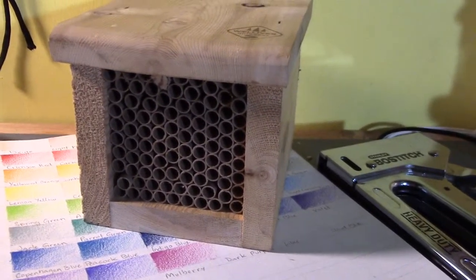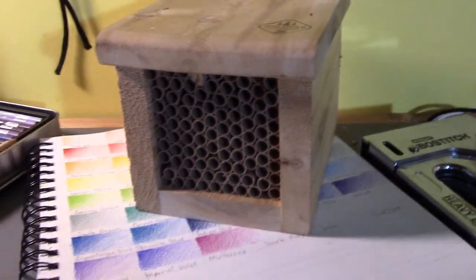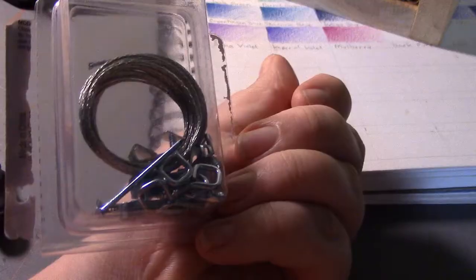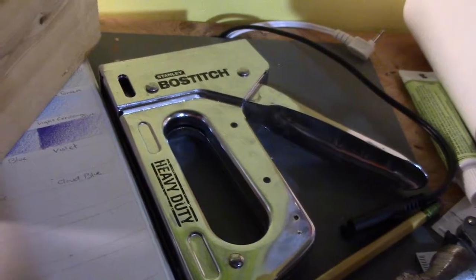Since I couldn't find a video on how to hang a mason bee house that doesn't come with a mounting system, I wanted to show how I used a picture hanging kit and a staple gun to mount this house I bought online.